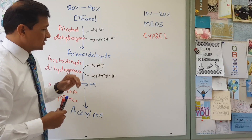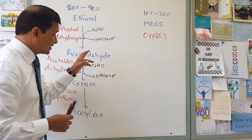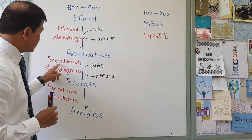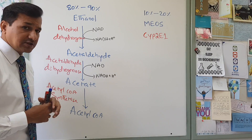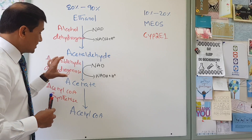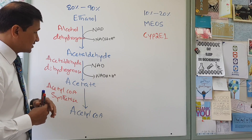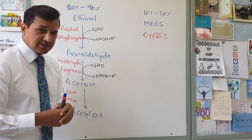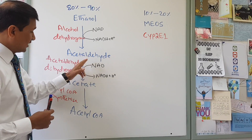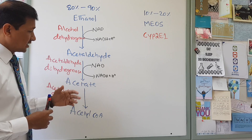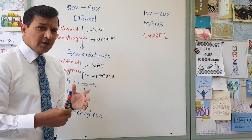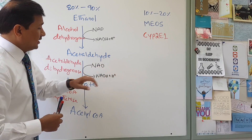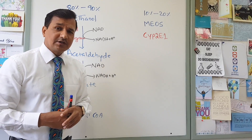Acetaldehyde largely gets down into the mitochondria. In the mitochondria, we have acetaldehyde dehydrogenase enzyme, which converts NAD into NADH plus H+ and thereby oxidizes acetaldehyde into acetate. So there will be NADH plus H+ produced in the mitochondria.